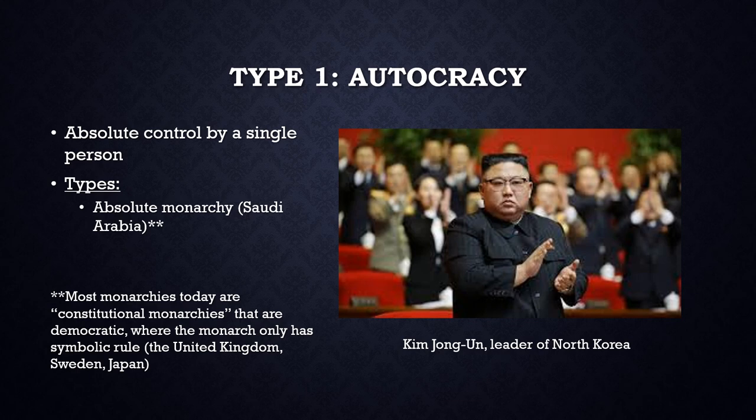One of the few absolute monarchies existing today is Saudi Arabia. Most monarchies today are constitutional monarchies, like the United Kingdom, Sweden, or Japan. A constitutional monarchy is a democracy where the monarch has only symbolic power, and the constitution of the country strongly limits their power. The democratically elected legislature in a constitutional monarchy makes the actual laws and decisions.